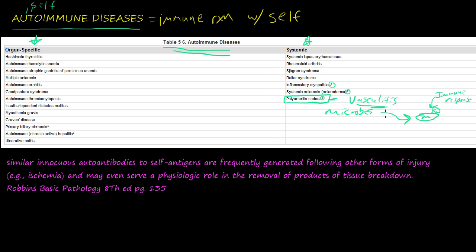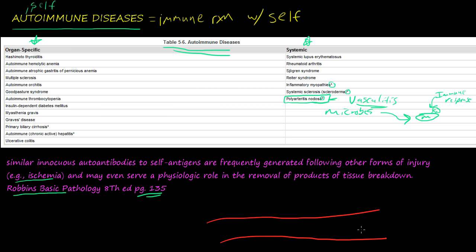There might be some overlap between some of these diseases. In Robbins Basic Pathology, 8th edition, page 135 — let's say we have a blood vessel here, and consider a normal virus or a common cold.